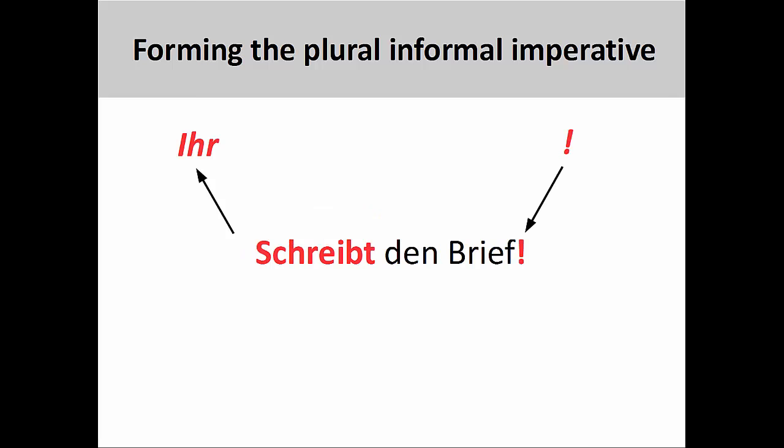First we remove the second person plural pronoun ihr, which then moves the verb to the first position in the sentence. We then add an exclamation point to the end. And that's it. The plural informal imperative of the verb is the same as the second person plural present tense verb form.